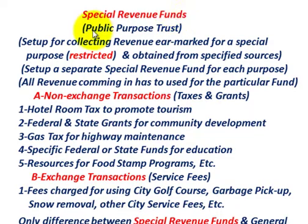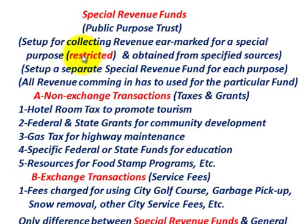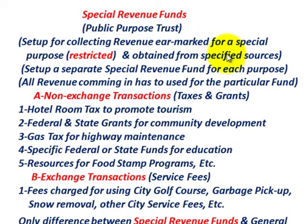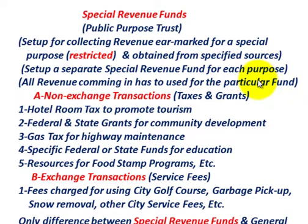The Special Revenues Fund is referred to as a Public Purpose Trust. It's set up for collecting revenues that are earmarked for a special purpose — they're restricted for a specific use and must be obtained from a specified source. You set up a separate Special Revenues Fund for each purpose it's intended for, and all revenue coming in has to be used for that particular funding purpose.